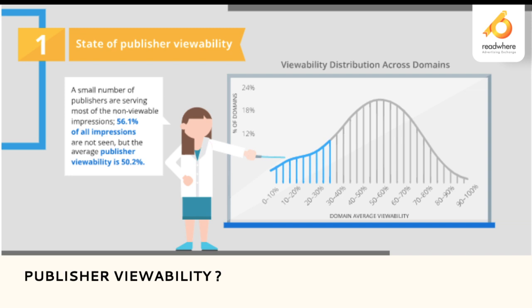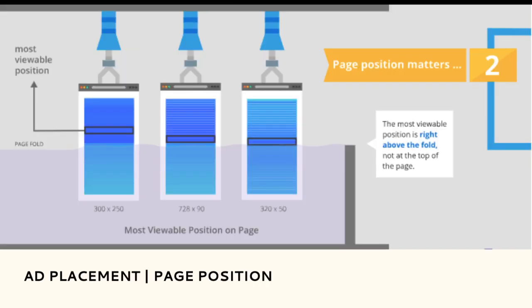Across the ecosystem, viewability is around 50.2%. Page position matters for improving ActiveView. If you look at three similar positions with three different ad formats — all above the fold — the most viewable one is 300×250. This is because 50% of the ad appears on the first fold while the other 50% is below it, giving it much higher viewability compared to 728×90 or 320×50 horizontal ad units.